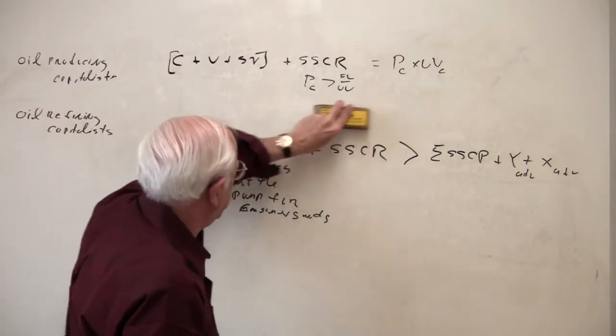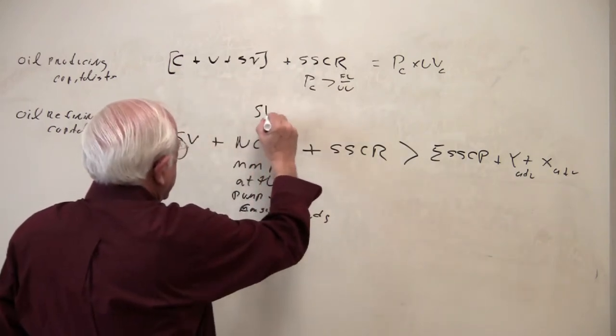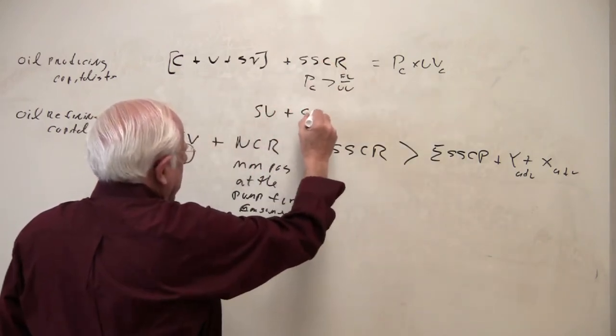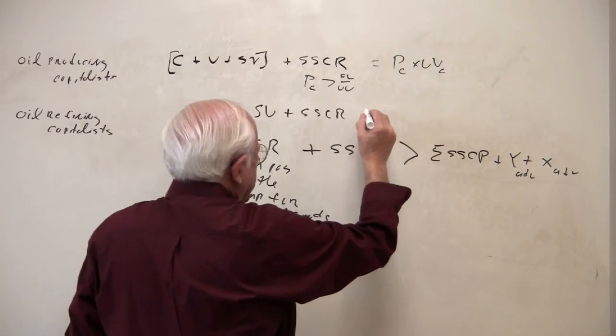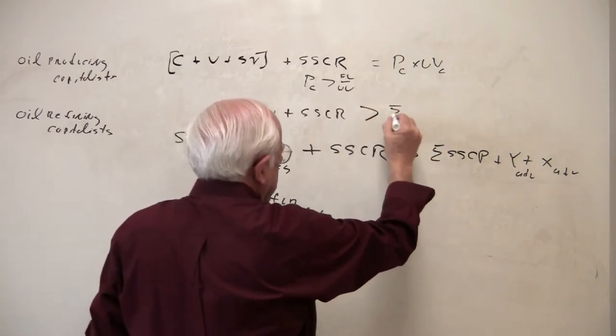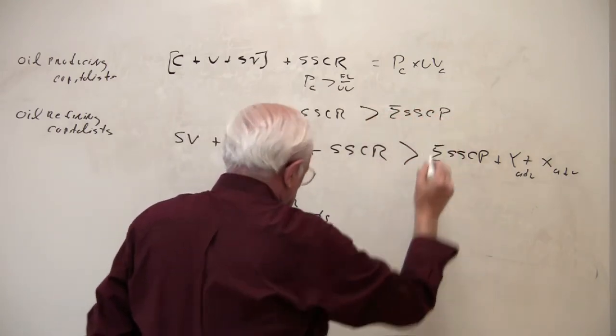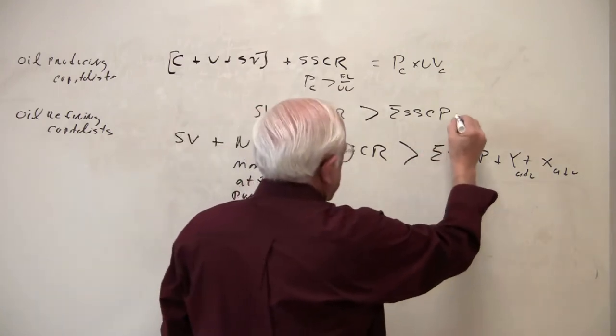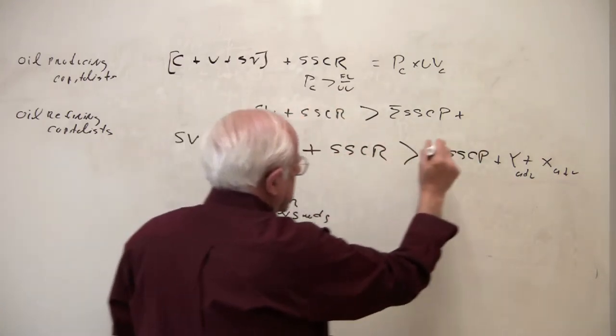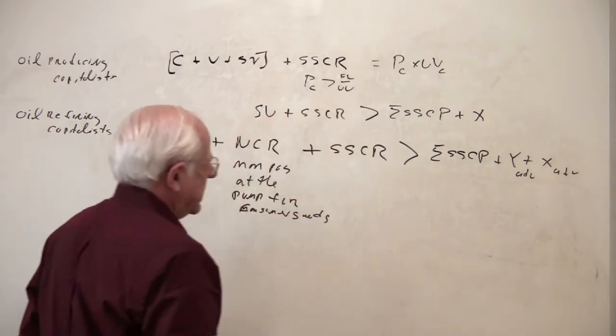That is, to make it perfectly consistent, they get a surplus value plus the subsumed class revenue. And my guess is this is greater plus whatever expenditures they have to make to get this monopoly position.